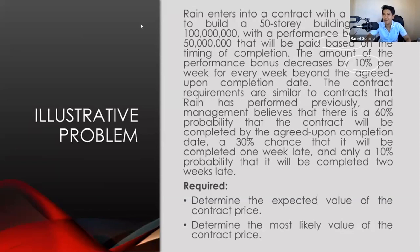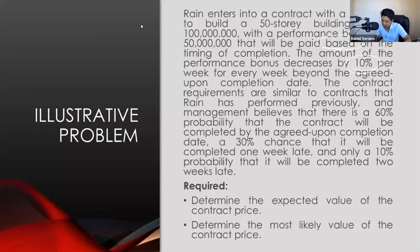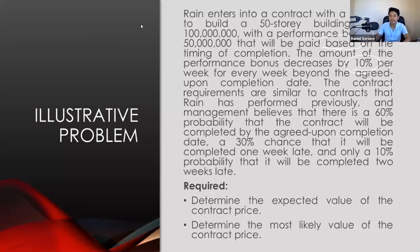The amount of the performance bonus decreases by 10% per week for every week beyond the agreed-upon completion date. According to the problem, there is a 60% probability the contract will be completed by the agreed-upon completion date, a 30% chance it will be completed one week late, and only a 10% probability it will be completed two weeks late. Requirements are the same: expected value and most likely amount.